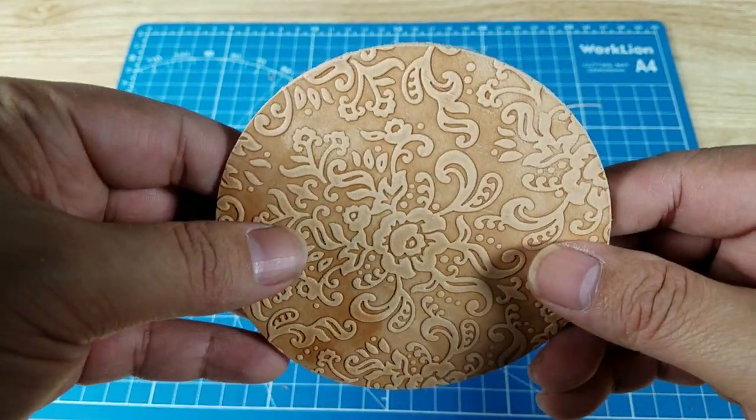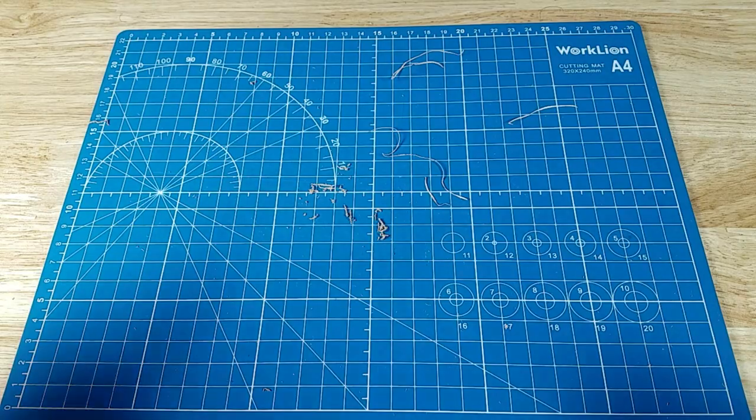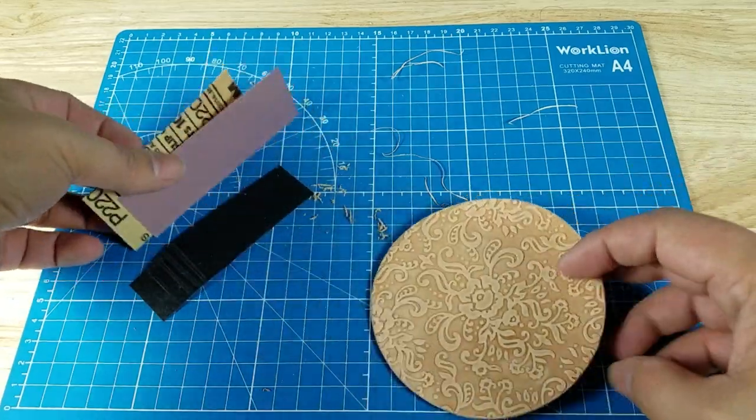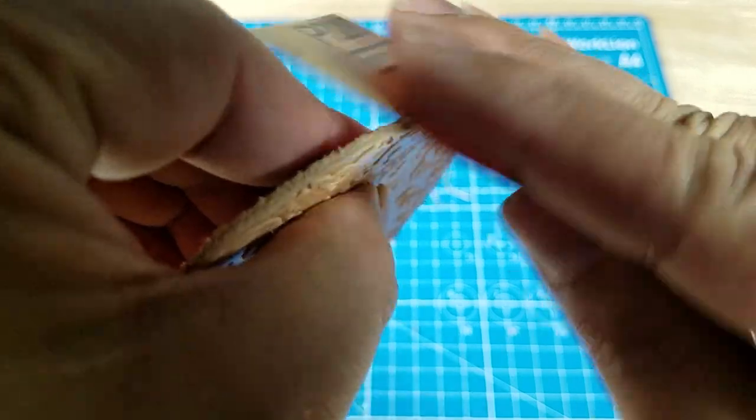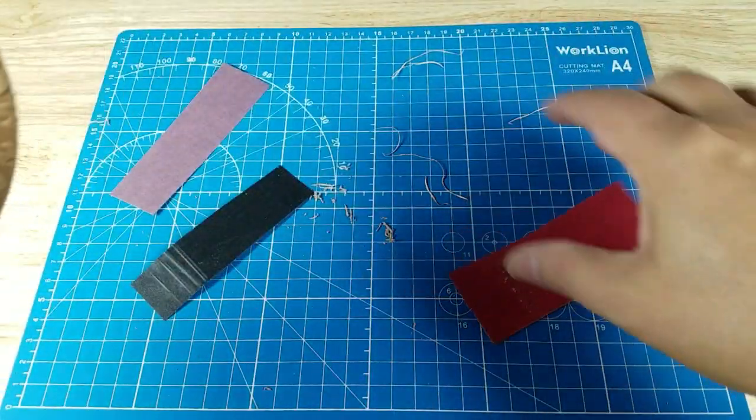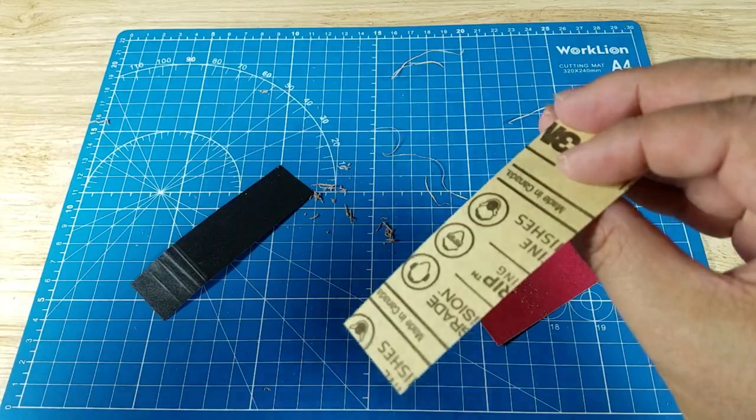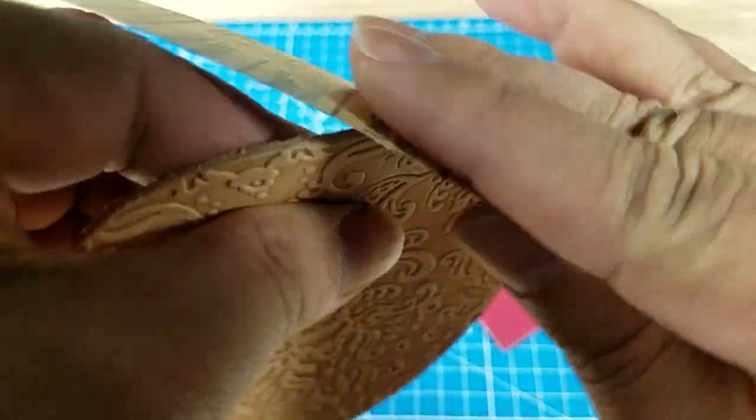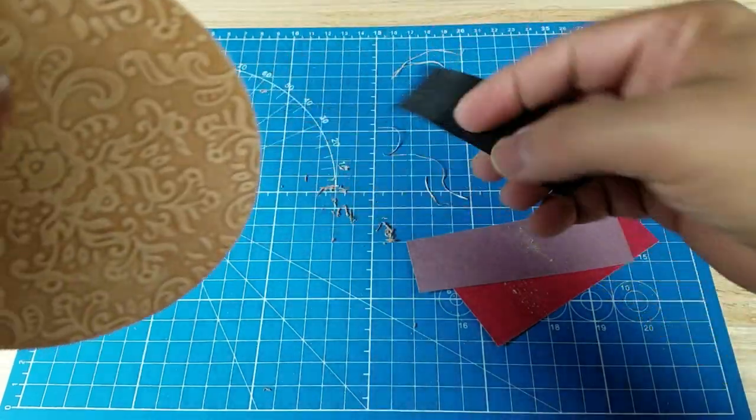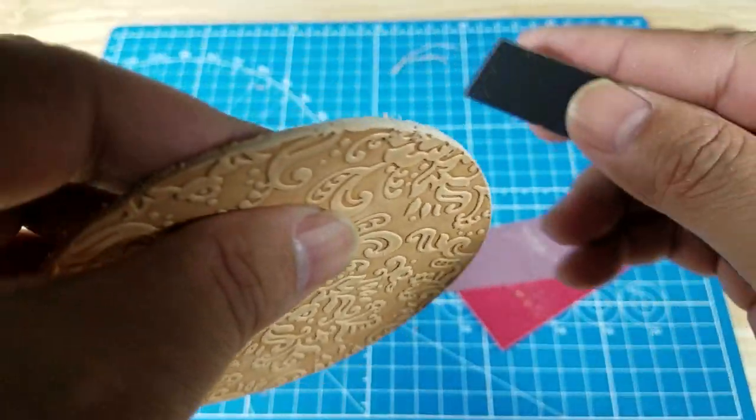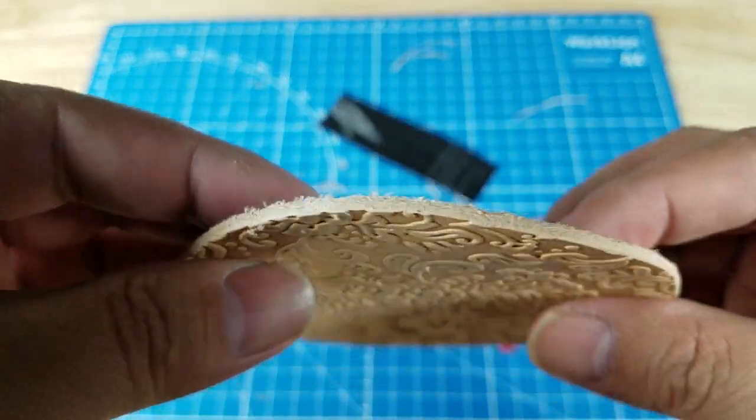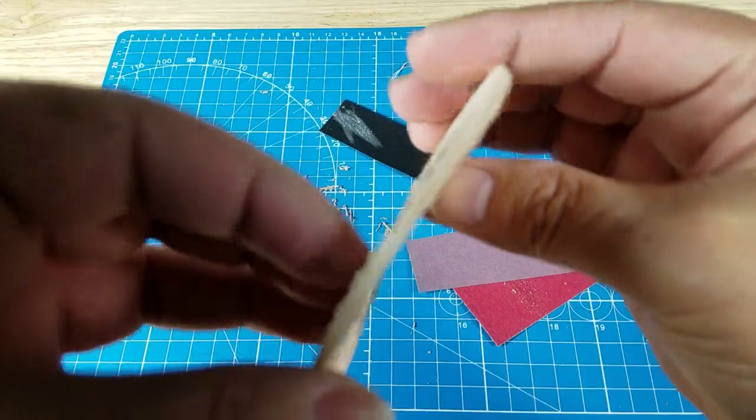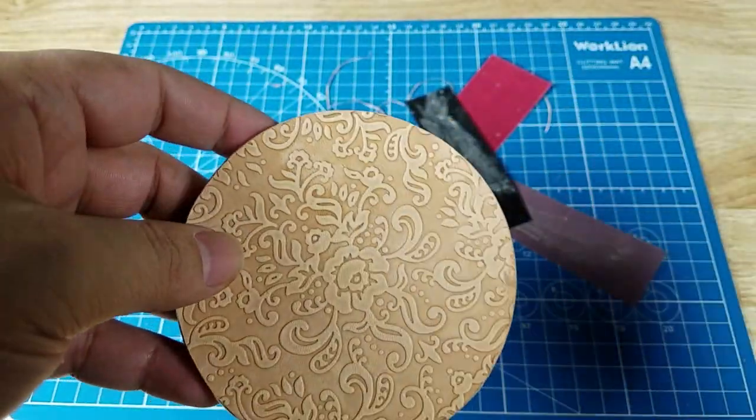Let's do the edge work next. Before burnishing the edges we gotta smooth that out. I normally start with 220 grit paper, then go to 400, sand it down. For coasters I'll go up to 800 and then stop. If I was doing a wallet I might go up to a thousand or two thousand.